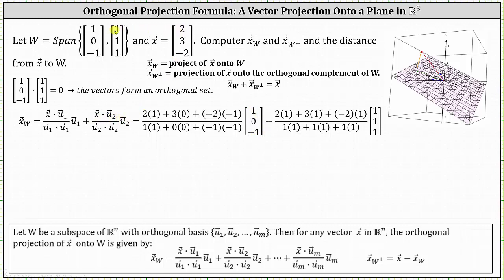For the second term, x · u2 is (2)(1) + (3)(1) + (-2)(1), divided by u2 · u2, which is (1)(1) + (1)(1) + (1)(1), times vector u sub two, which is the vector (1, 1, 1).